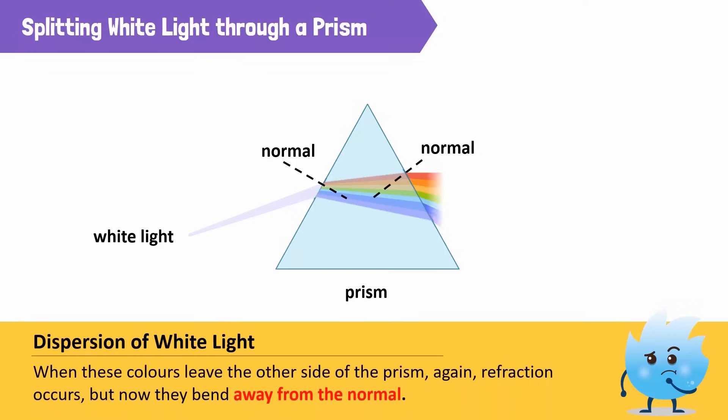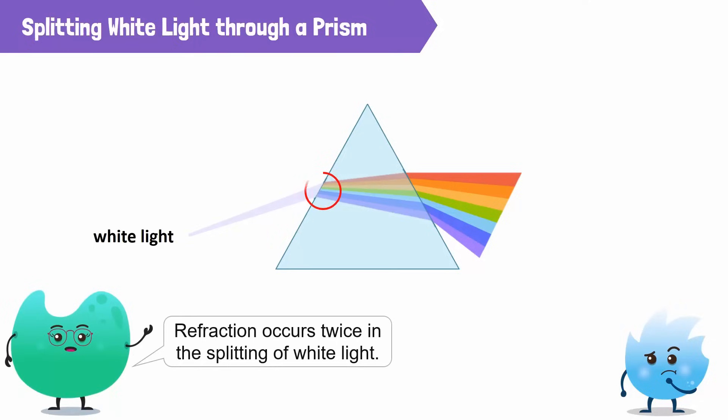When these colors leave the other side of the prism again, refraction occurs. But now they bend away from the normal, since light speed increases to its speed in air. Thus, refraction occurs twice in the splitting of white light through the prism.